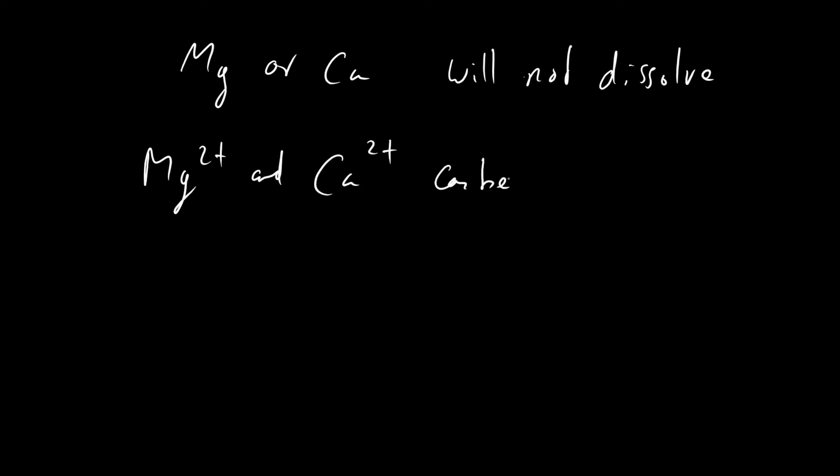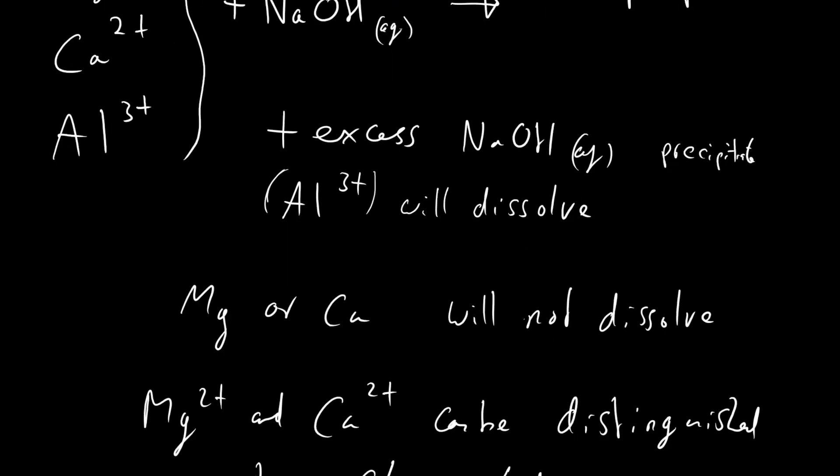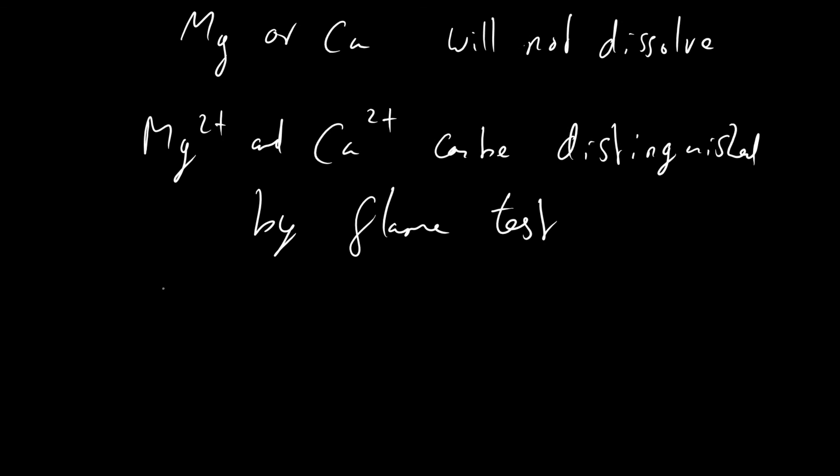Mg2+ and Ca2+ can be distinguished by the flame test we've already looked at. Calcium produces a red flame, and magnesium produces no change in the flame color—there's no color, so your blue flame will remain blue, whereas calcium ions produce a red flame.